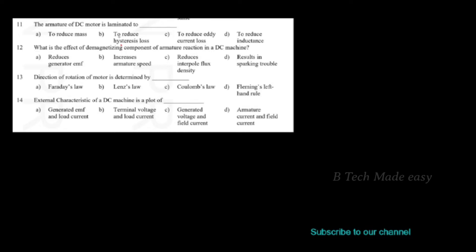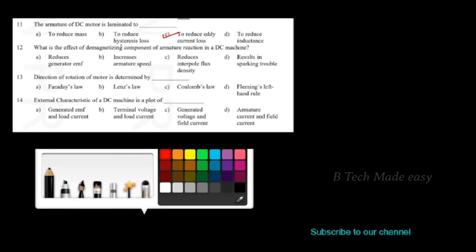If you have a DC motor, or a DC generator, or a transformer, to reduce the eddy current loss. If the armature of a DC machine or transformer is laminated by using silicon steel, we can use silicon steel lamination.